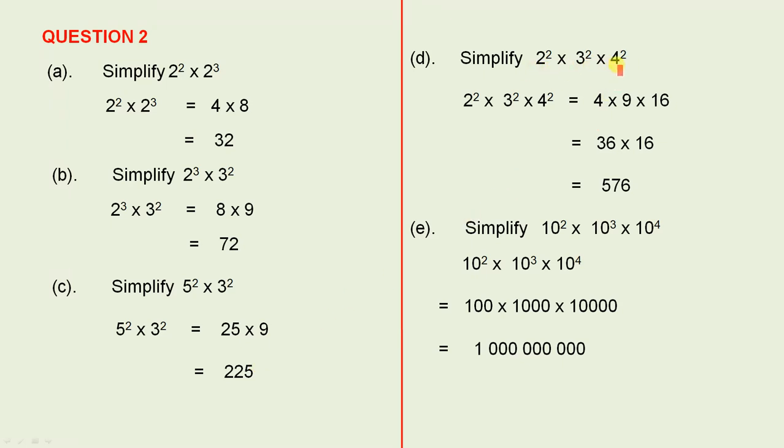Simplify this numerical expression here. 2 squared is 4, 3 squared is 9, 4 squared is 16. 4 times 9 is 36, 36 times 16 is 576.